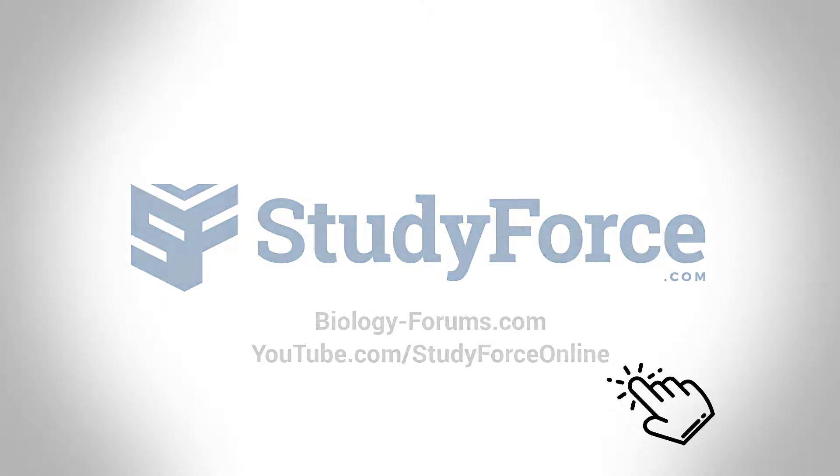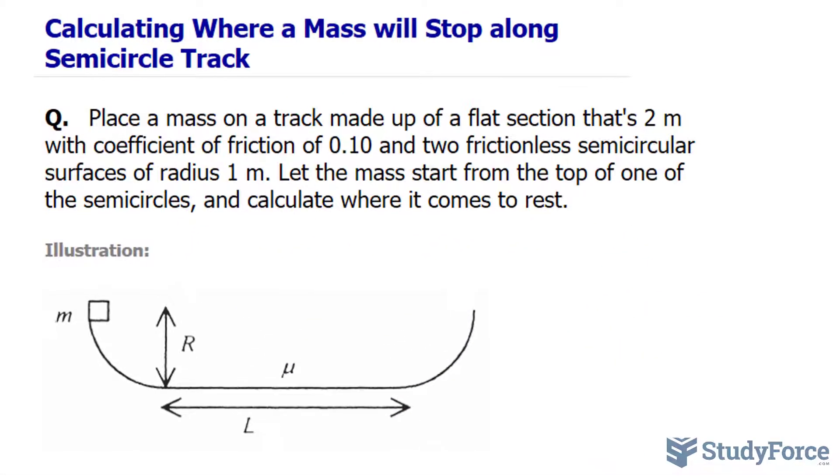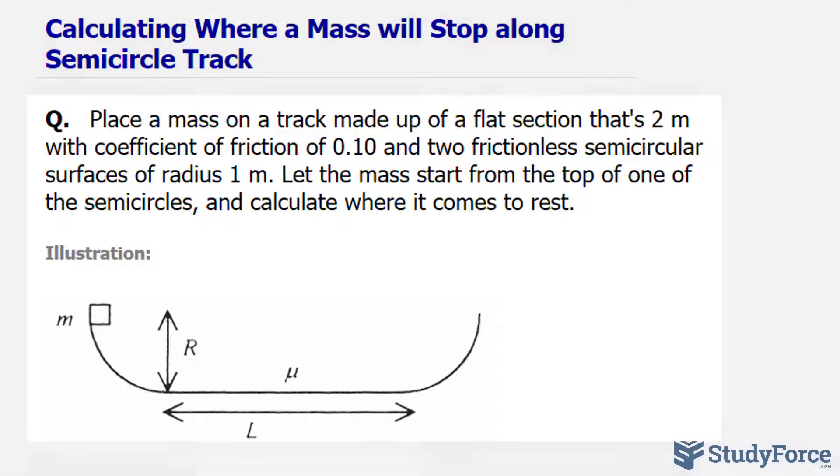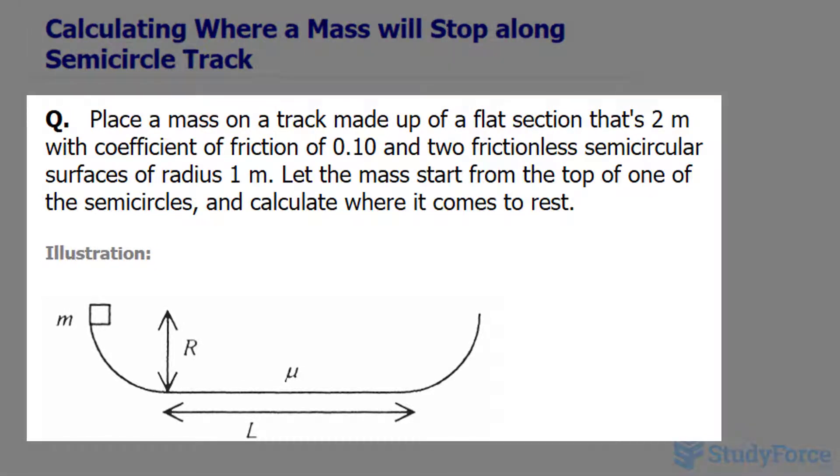In this lesson, I'll show you how to calculate where a mass will stop that is sliding along a semicircular track. The question reads, place a mass on a track made up of a flat section that's 2 meters with a coefficient of friction of 0.10 and two frictionless semicircular surfaces of radius 1 meter. Let the mass start from the top of one of the semicircles and calculate where it comes to rest.